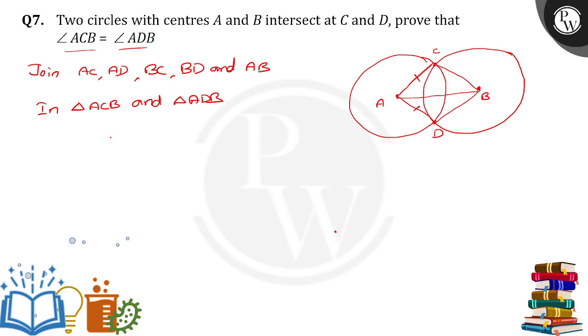In triangles ACB and ADB, AC equals AD because both are radii of the first circle. BC equals BD as radii of the second circle. And AB equals AB, which is the common side for both triangles.